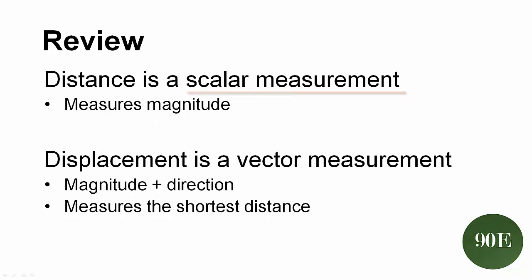Okay, so just to review for this video, distance is a scalar measurement, so it measures magnitude only. Displacement, on the other hand, is a vector measurement. It looks at magnitude and direction. And that magnitude is the shortest distance between the origin and the destination. And if the origin and the destination are exactly the same spot, displacement is equal to zero.